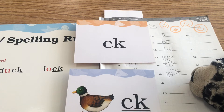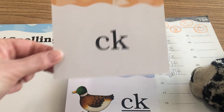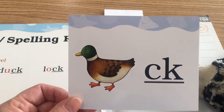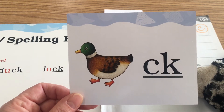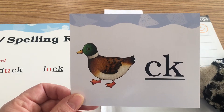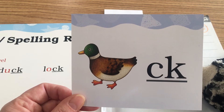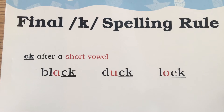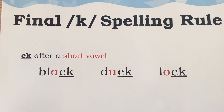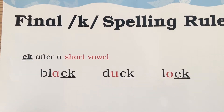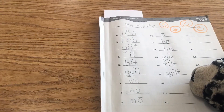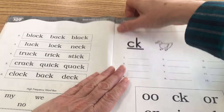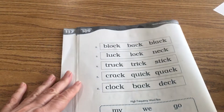Today for our phonics we're going to be reading some words that have the final diagraph CK. We code the final diagraph CK with a line underneath the CK at the end of the word, so at the end of 'duck' we use the sounds d-uh-k. Here is our spelling rule: final diagraph CK comes after a short vowel — black, duck, lock. We'll look for that in lesson 109, which we started yesterday.